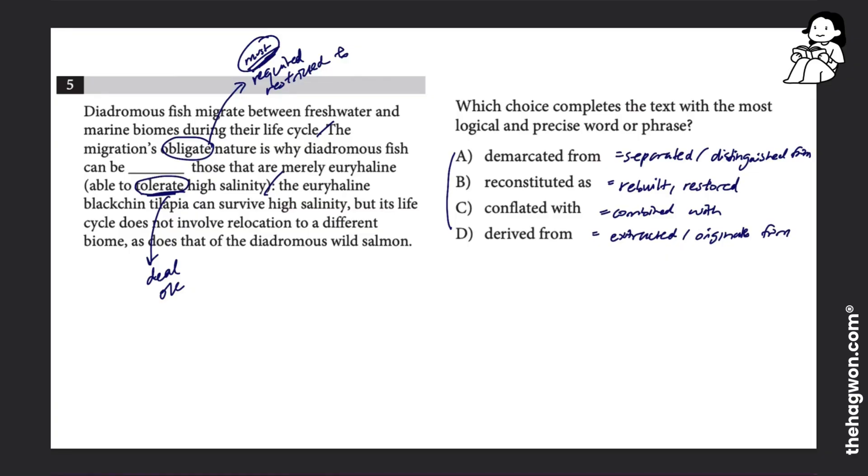So what we're saying is that these diadromous fish who are obliged, who must make this migration, are different from these other fish that are euryhaline or just able to tolerate the salinity. So those two are different from each other, and the only answer choice that says that those two fish are different from each other is A, demarcated from.